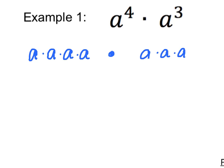In order to simplify our solution, we will then count up how many a's we are multiplying together. We have 4 from the first term and 3 from the second term, giving us a to the 7th power as our final answer.